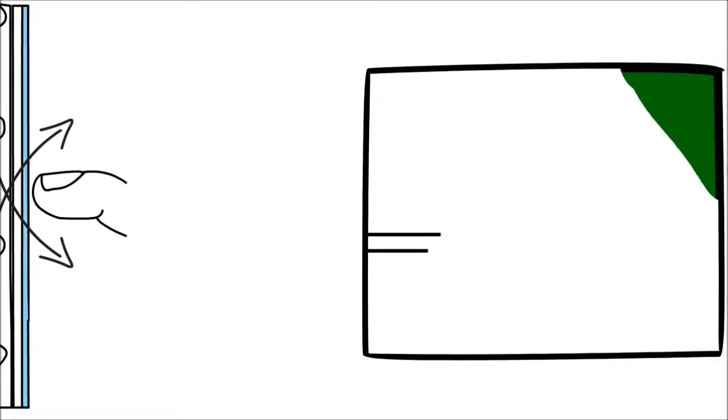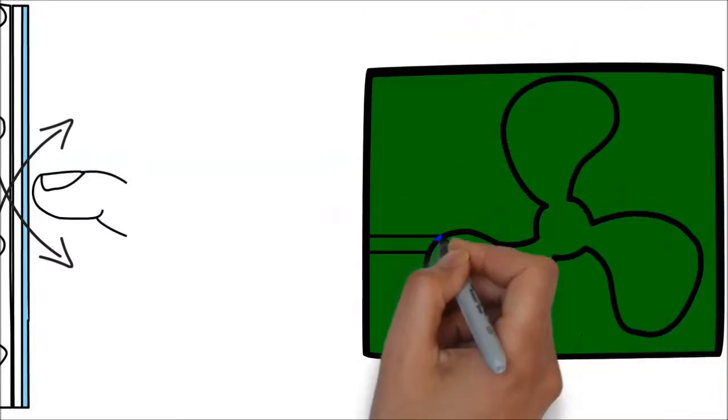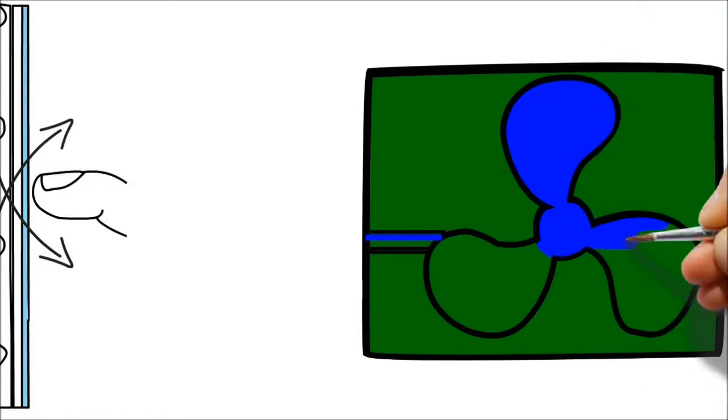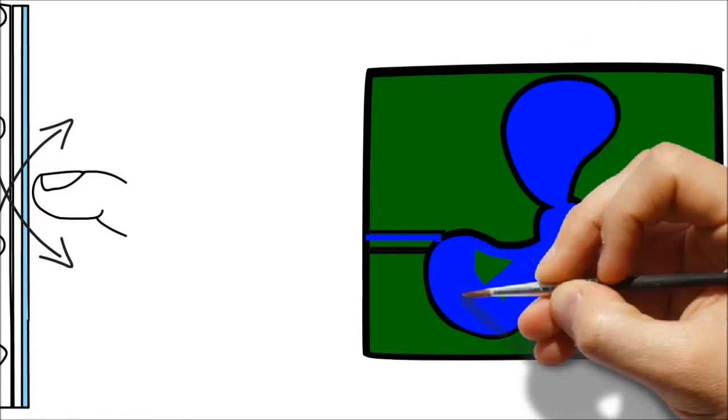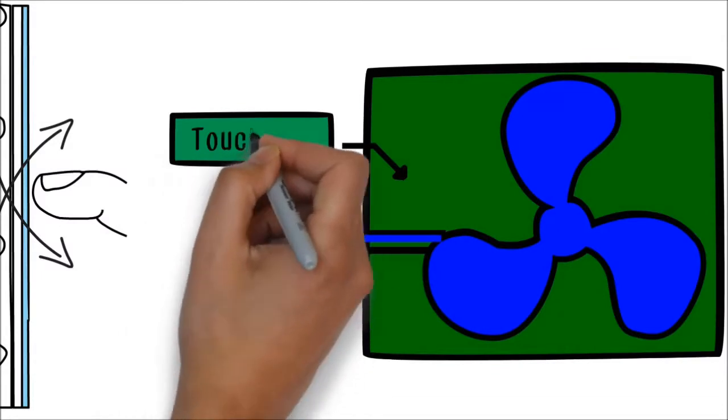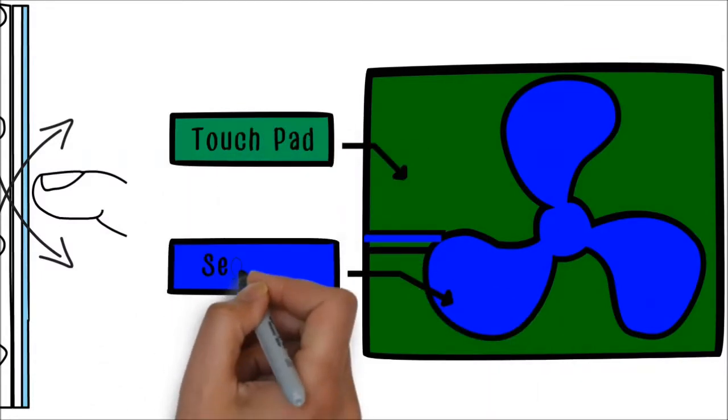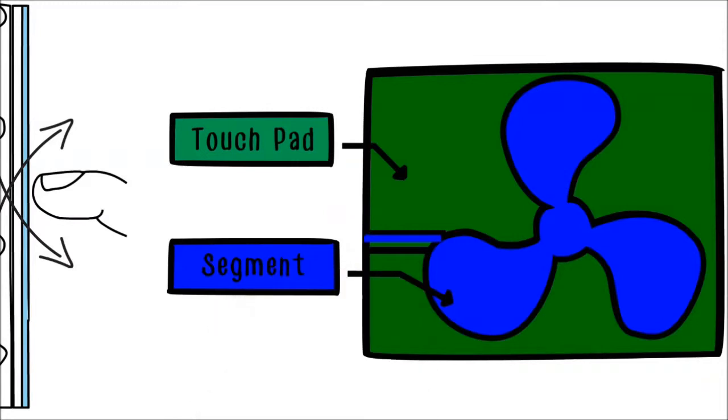In an in-cell implementation, the touch pads are on the same layer as the display segments, surrounding the segment electrodes. The touch pads and segments are made of the same transparent conductive indium-tin oxide, or ITO, layer in the same process step. In this implementation, the touch functionality is obtained without additional cost.